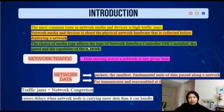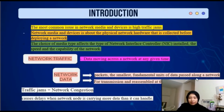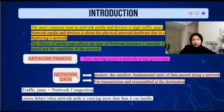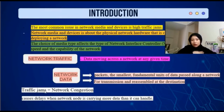Network traffic refers to data moving across a network at any given time. Network data consists of packets, the smallest fundamental units of data passed along a network. Network data is broken into these packets for transmission and reassembled at the destination. Traffic jams are similar to network congestion, which causes delay when a network node is carrying more data than it can handle.